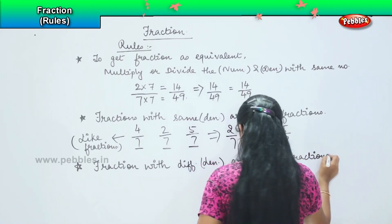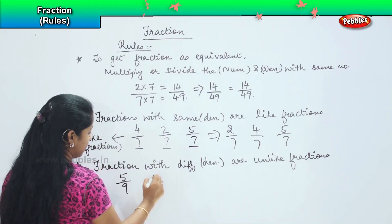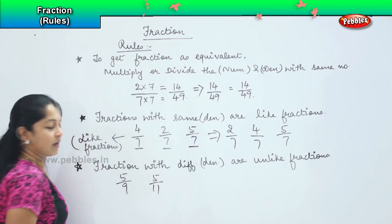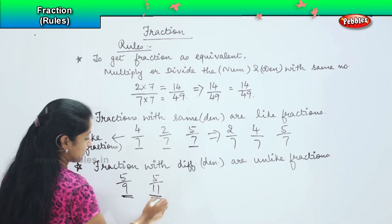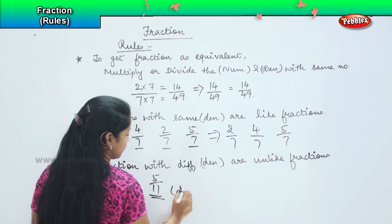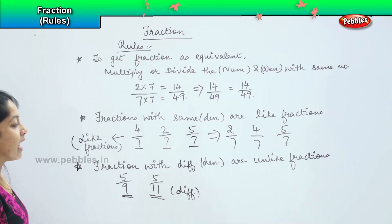So what do you mean by this, children? For example, if I have say 5 by 9, 5 by 11. In this case, if you see, this number and this number are different. Right? So these are called as unlike fractions.